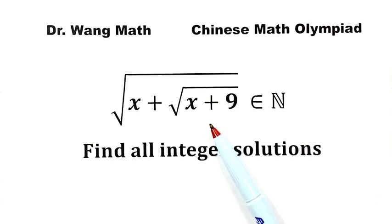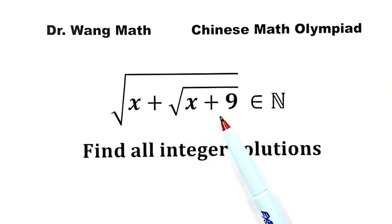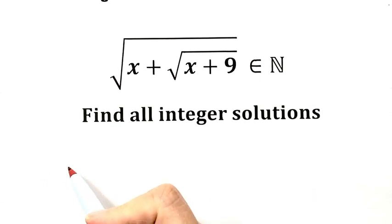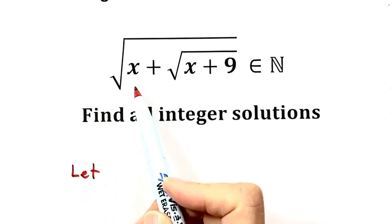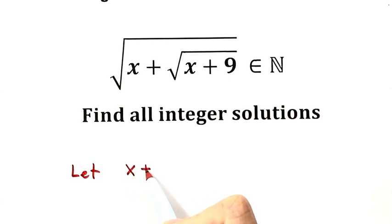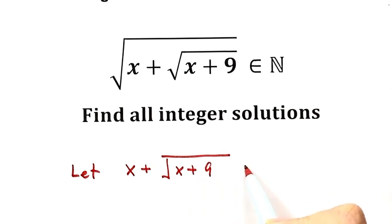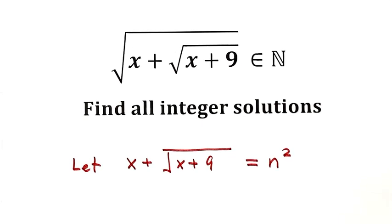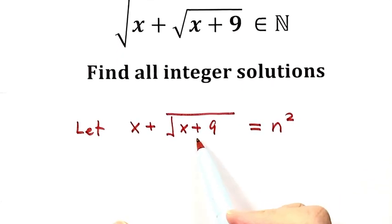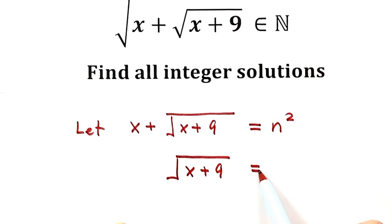Now let's see how to solve it. Because the given expression is a natural number, the part under the square root must be a perfect square. So let's start by assigning a variable: let the expression x plus the square root of x plus 9 equal n squared, a perfect square. Then let's introduce another variable — let the square root of x plus 9 equal t.